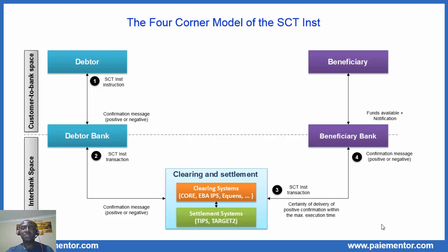In step 4, the beneficiary bank sends a confirmation message to the clearing system. That confirmation message can be positive or negative. When the beneficiary bank receives the SEPA transaction from the CSM, it performs all the controls to see if it can apply the SEPA transaction to the beneficiary's account. The beneficiary account should exist, be open, and all the conditions should be met to credit that account. If all goes well, the beneficiary bank sends a positive confirmation; otherwise, a negative confirmation is sent to the CSM. We assume that all goes well.